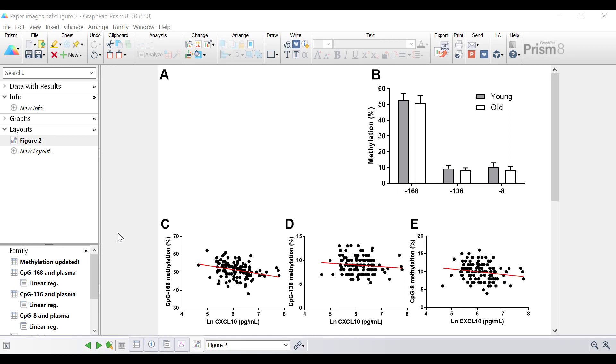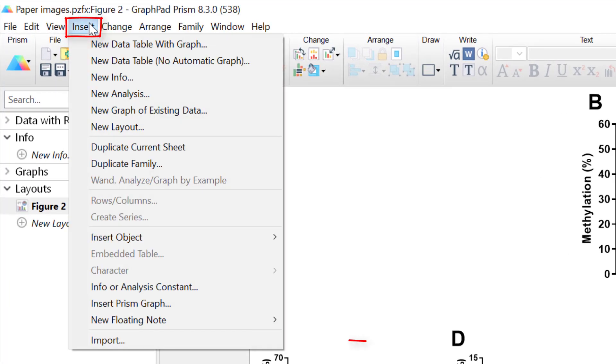Within Prism I have a layout page open. To insert a picture with a graph or layout window open simply go to insert import picture if inserting a picture to a graph or insert import if inserting a picture to a layout page. Since I have a layout page open I'll go to insert and then import at the bottom.